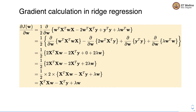Remember this particular form — the first part of the equation, x-transpose x w minus x-transpose y, is exactly the same as in linear regression. Now we add the partial derivative of the penalty term, which is lambda w, to this particular gradient calculation.